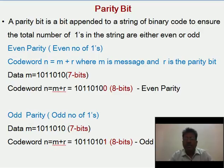For the same message, if we wish to make it an odd parity message, then 1 will be appended to make an odd number of ones. Therefore, the code word would be 10110101.